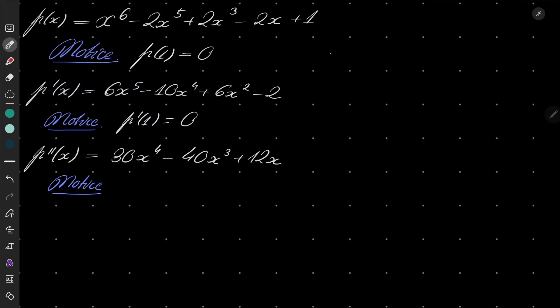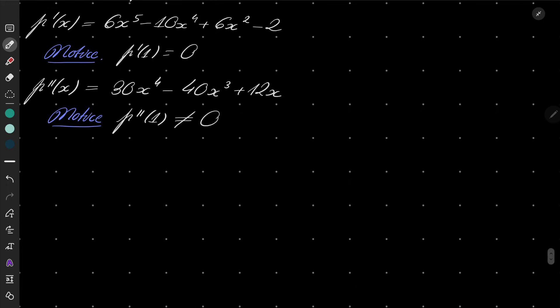Finally, p double prime of 1 is not 0, so now we conclude that p of x is divisible by x minus 1 squared, but not by x minus 1 cubed.